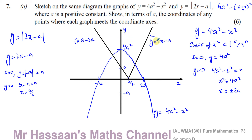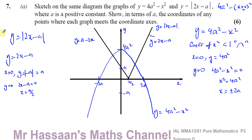So we've shown the places where each graph meets the y-axis and the x-axis. The sketch shows both graphs with all coordinate points where they meet the coordinate axes labelled. That's part A done.